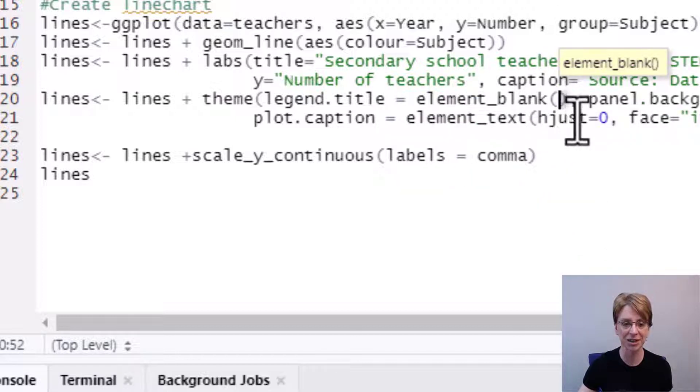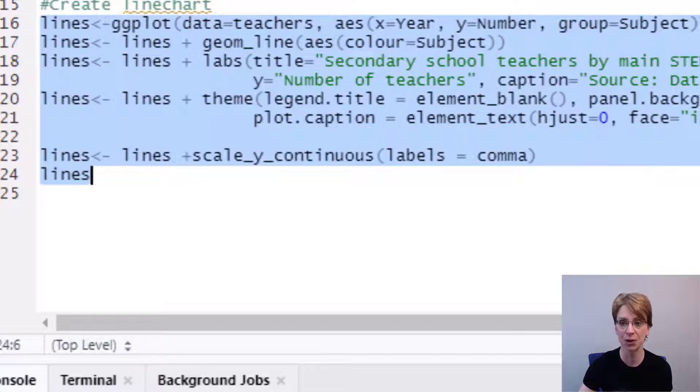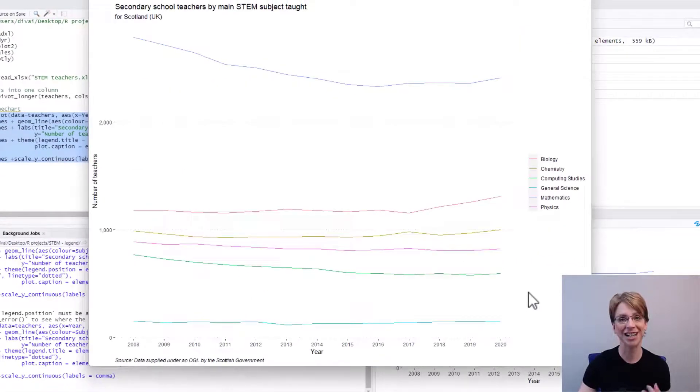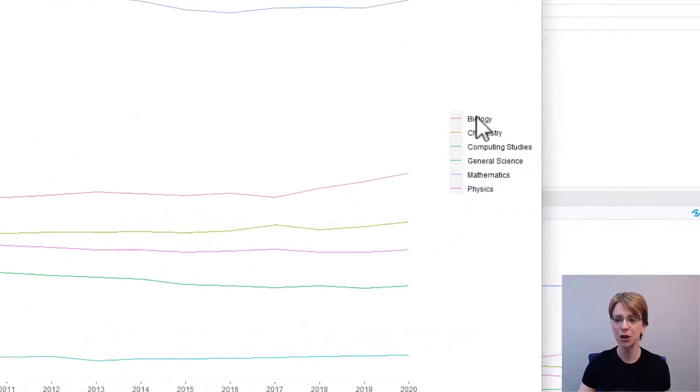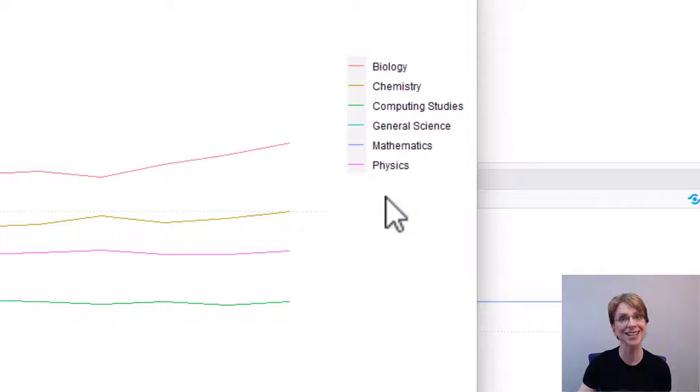Outside my double brackets I just make sure I've still got a comma to separate it from the next section of code and I do so all I need to do now is run my code and as you can see my legend has reappeared but it no longer has the title subject above it.